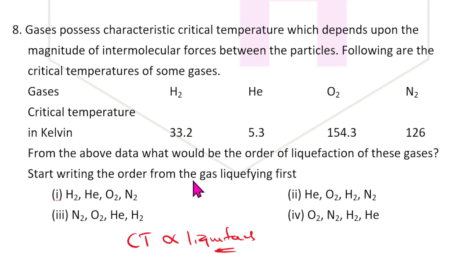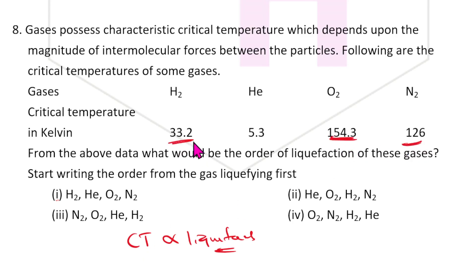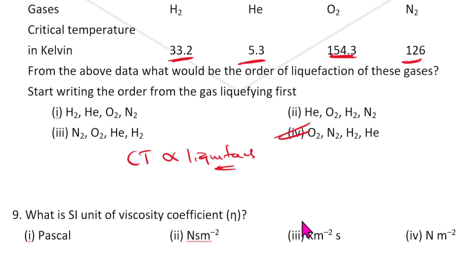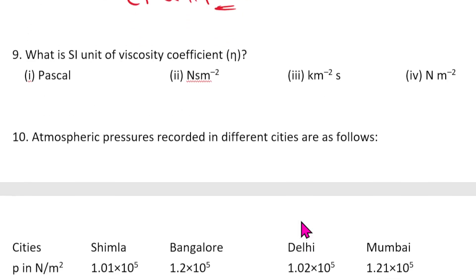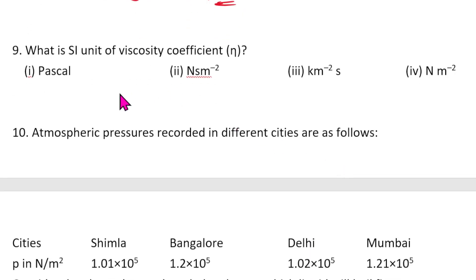The correct order of critical temperature is O₂ > N₂ > H₂ > He. So the answer for question 8 is the fourth option. Question 9: What is the unit of viscosity coefficient η?